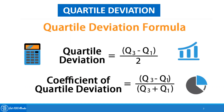A Quartile is a measurement which divides the data into 4 equal parts. Quartile means one-fourth. So when the entire data set is divided into 4 equal parts, we definitely have 3 Quartiles: Quartile 1, Quartile 2, and Quartile 3.